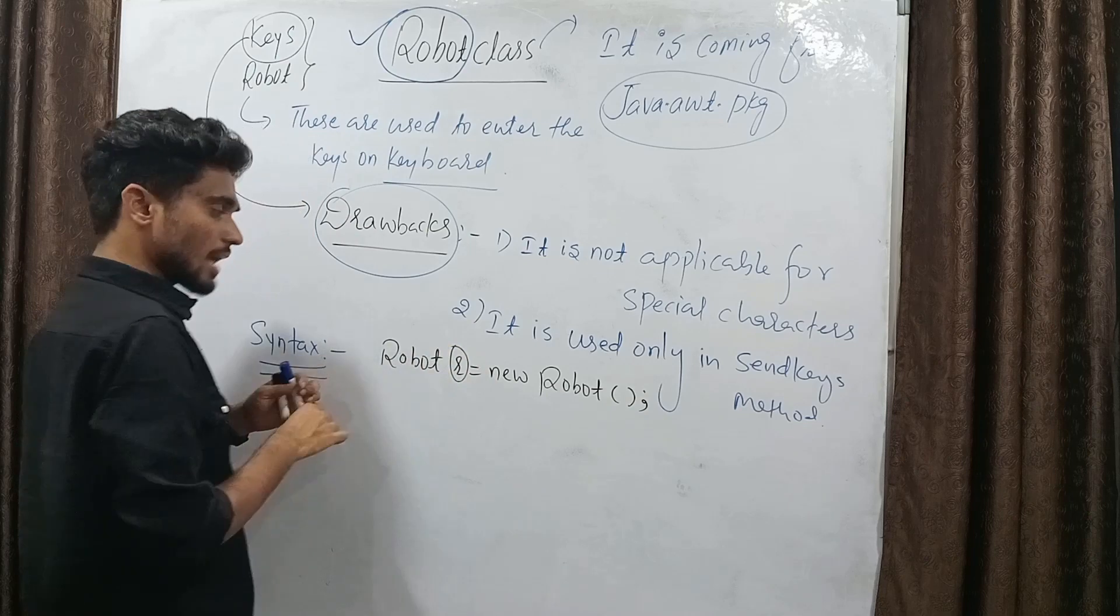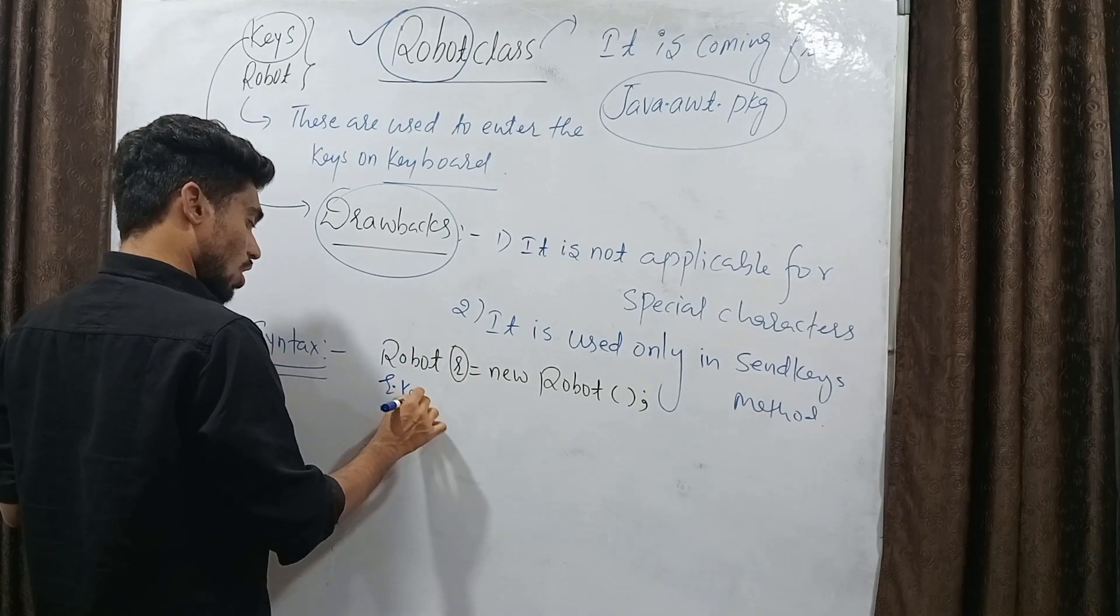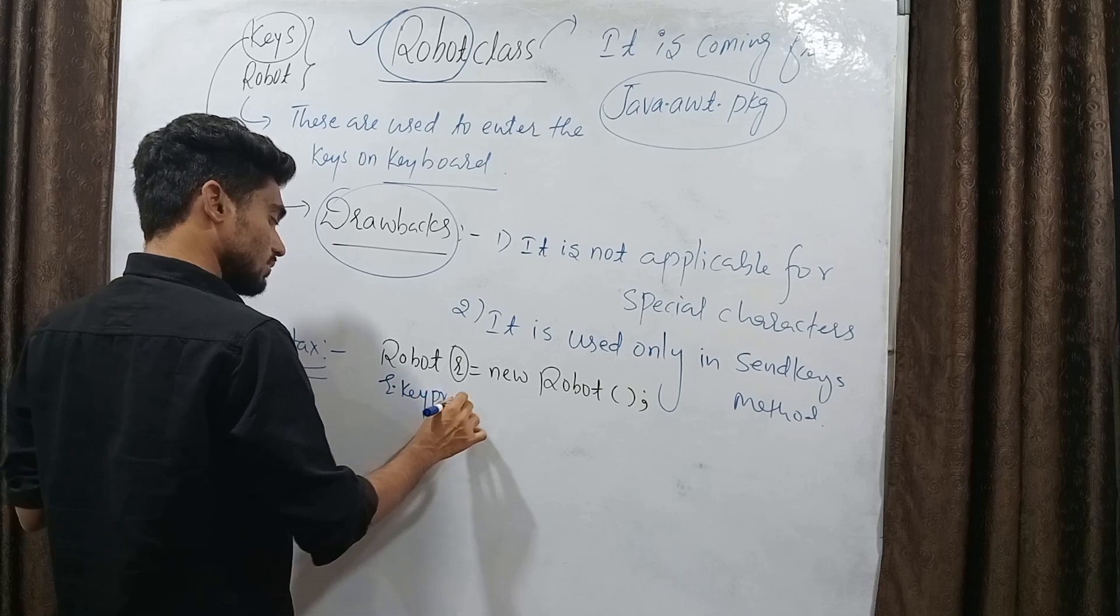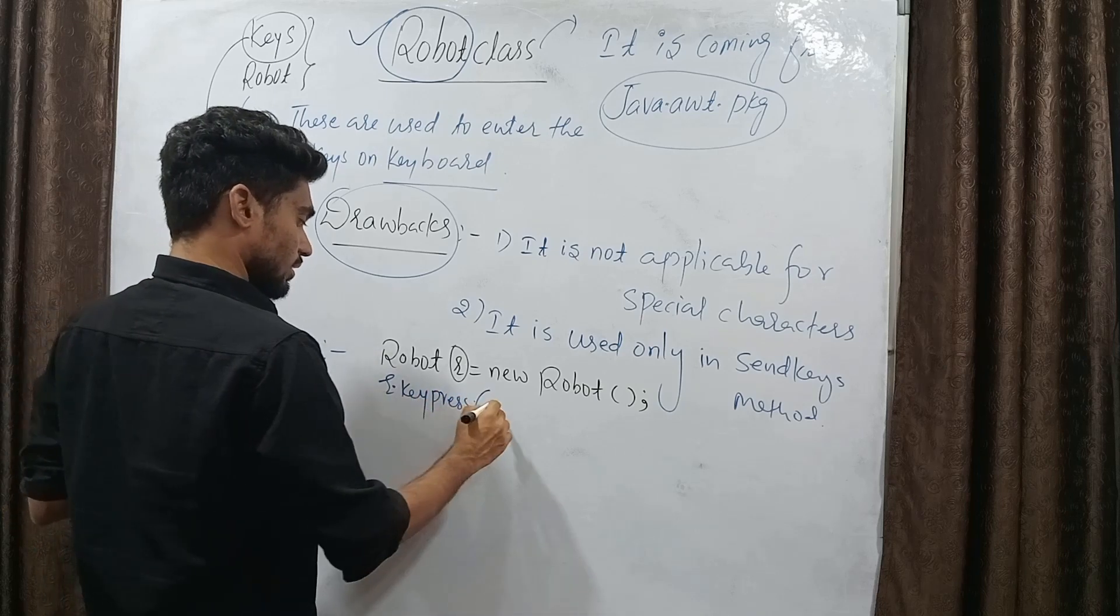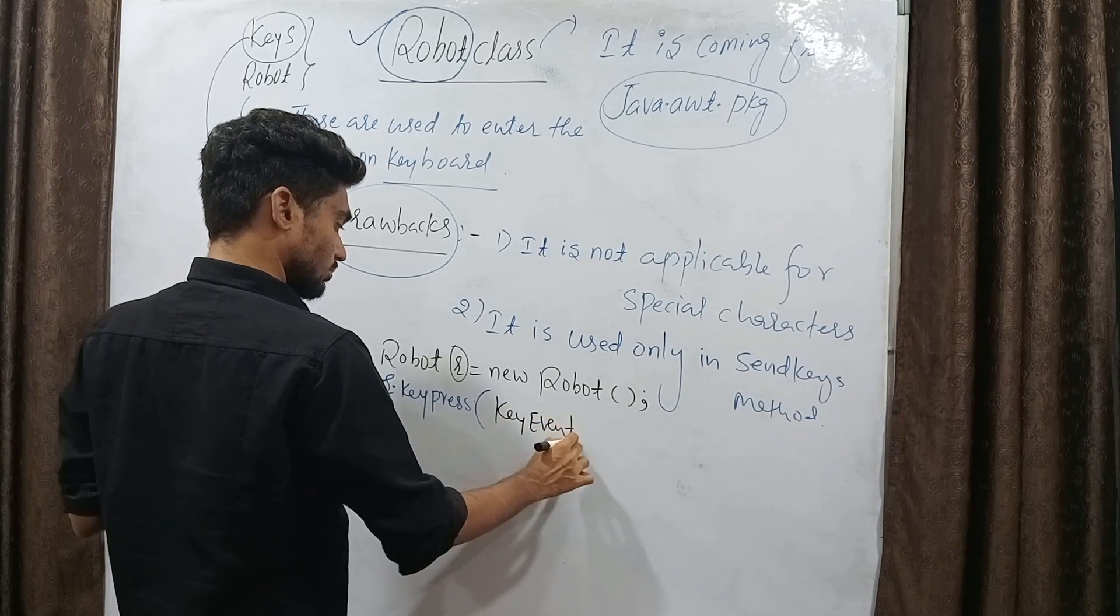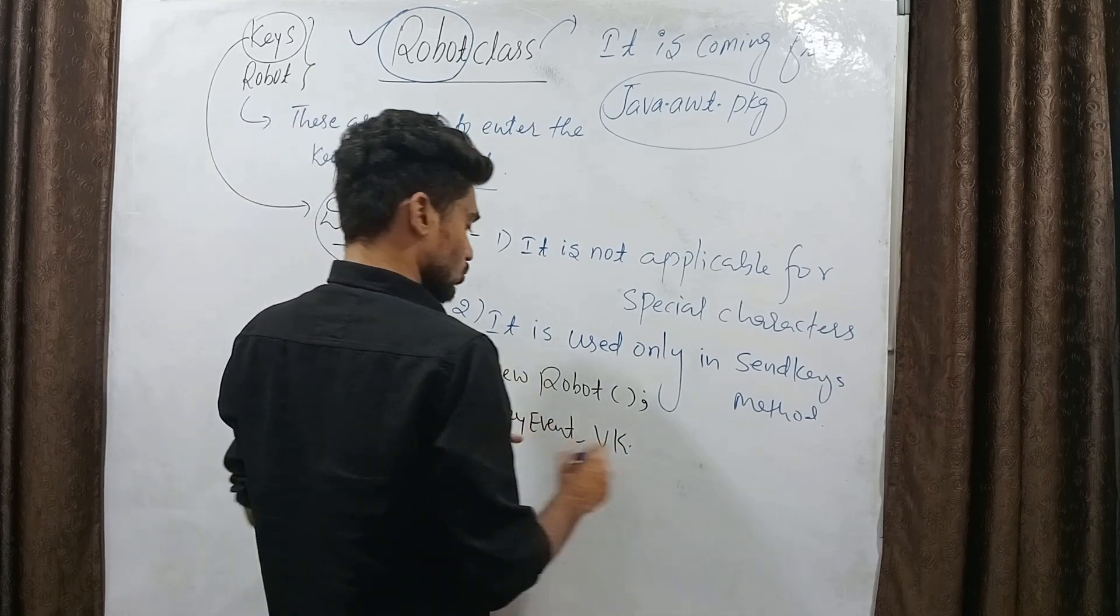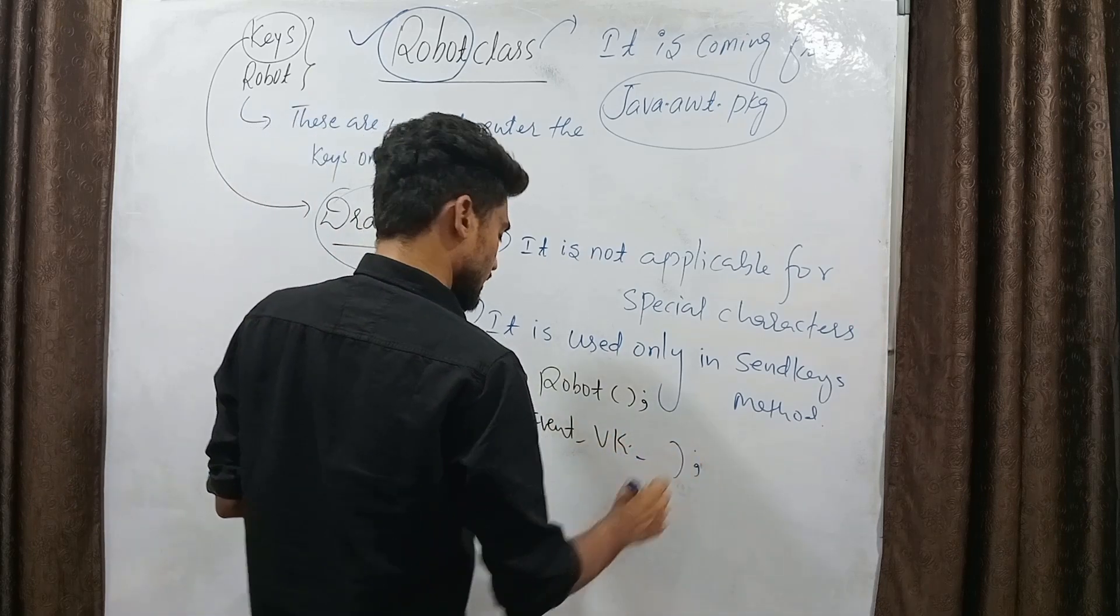Then the reference variable is r. First of all, you have to use key press method. r.keypress. Key event dot virtual key. Whatever the key you need to press now, that you can press here.